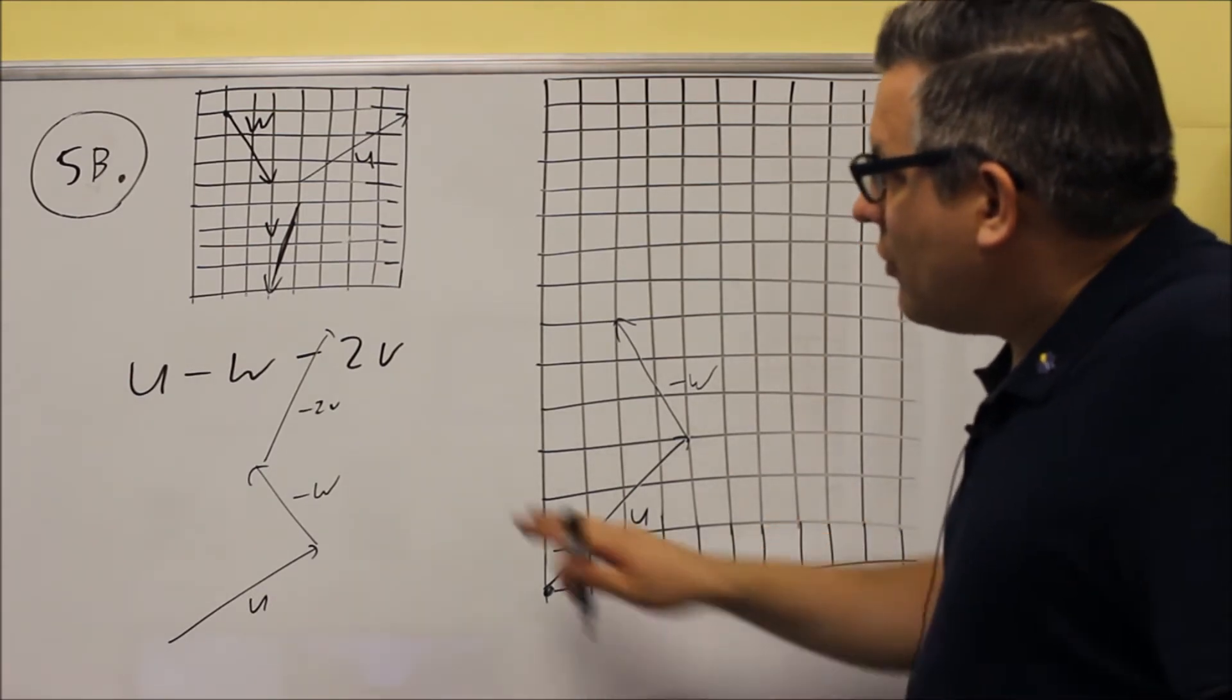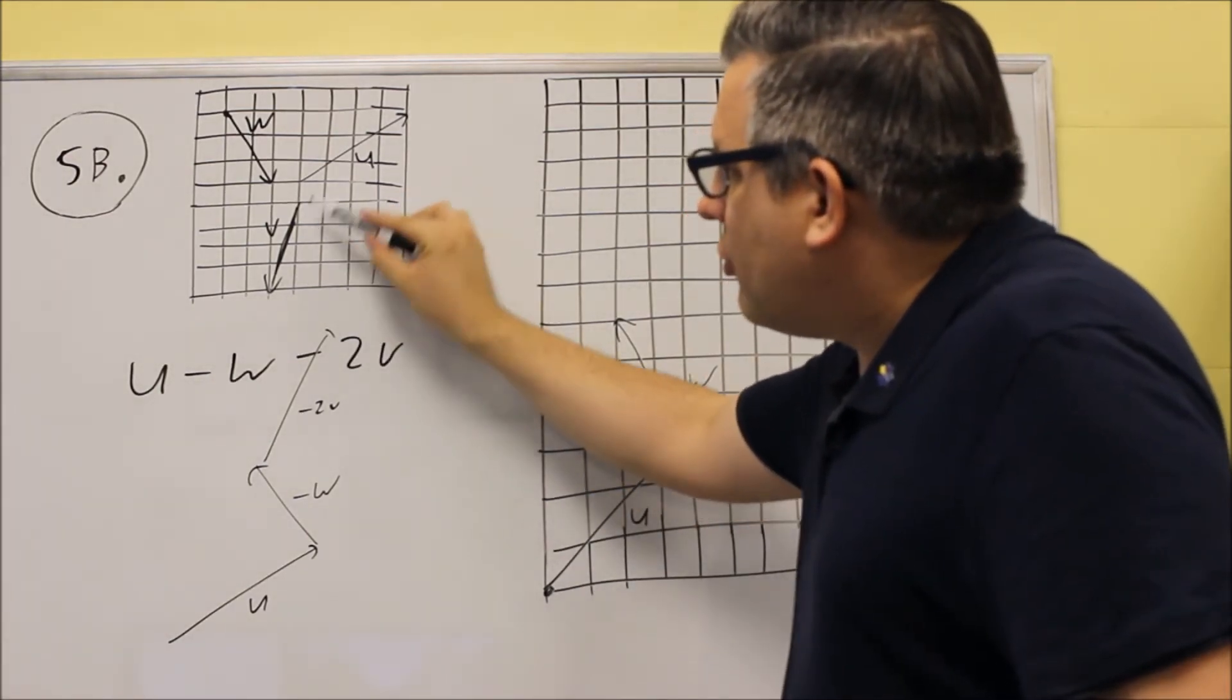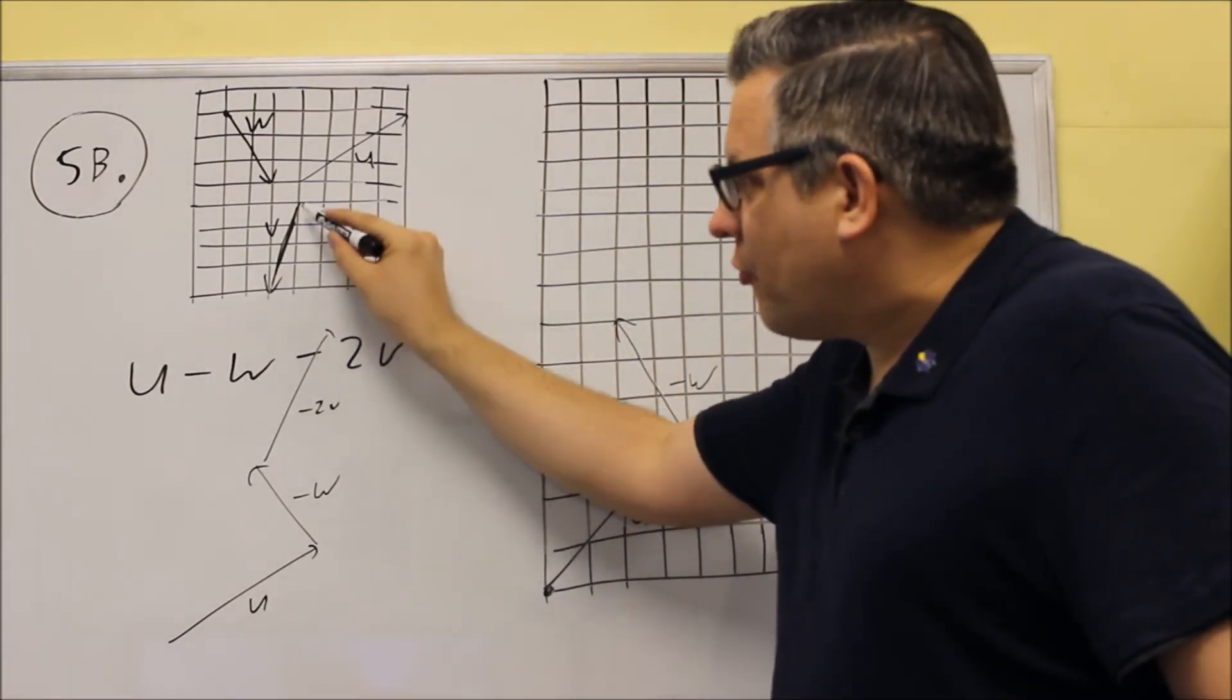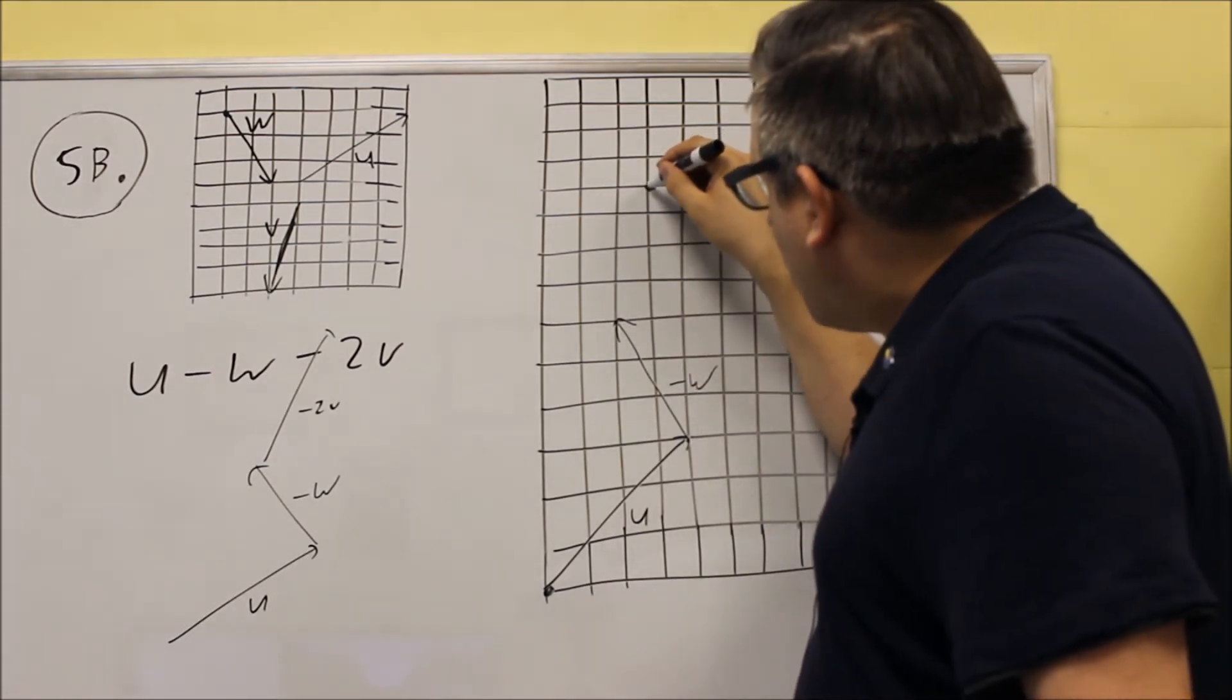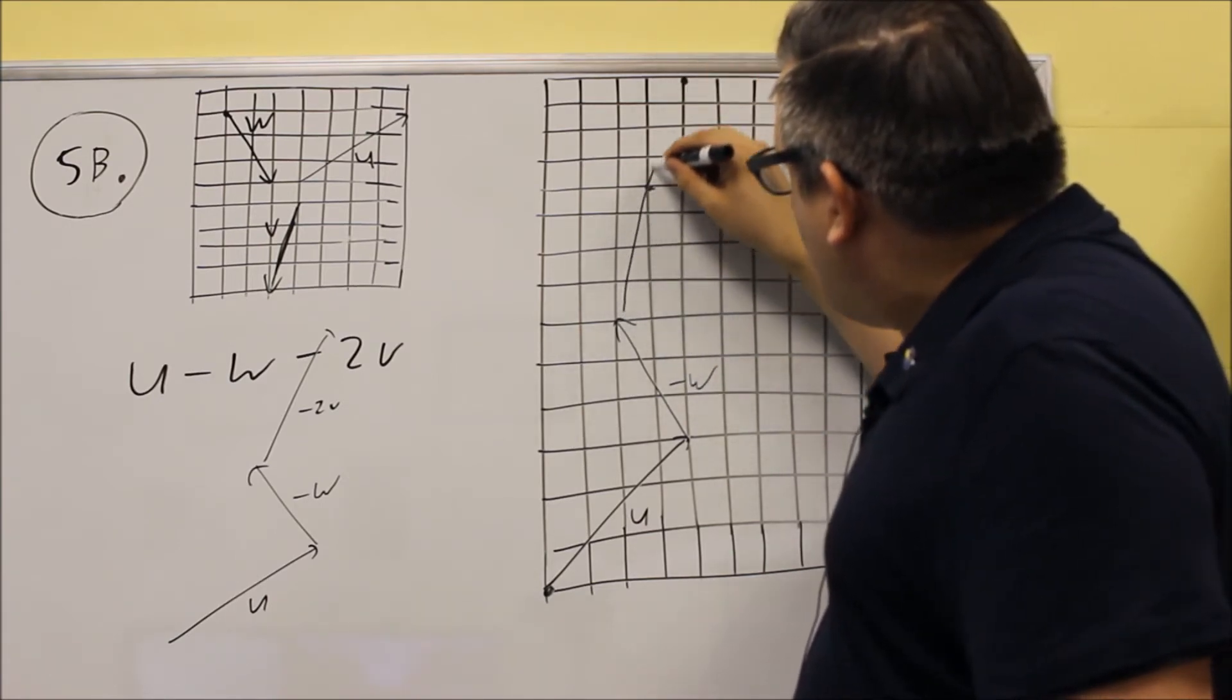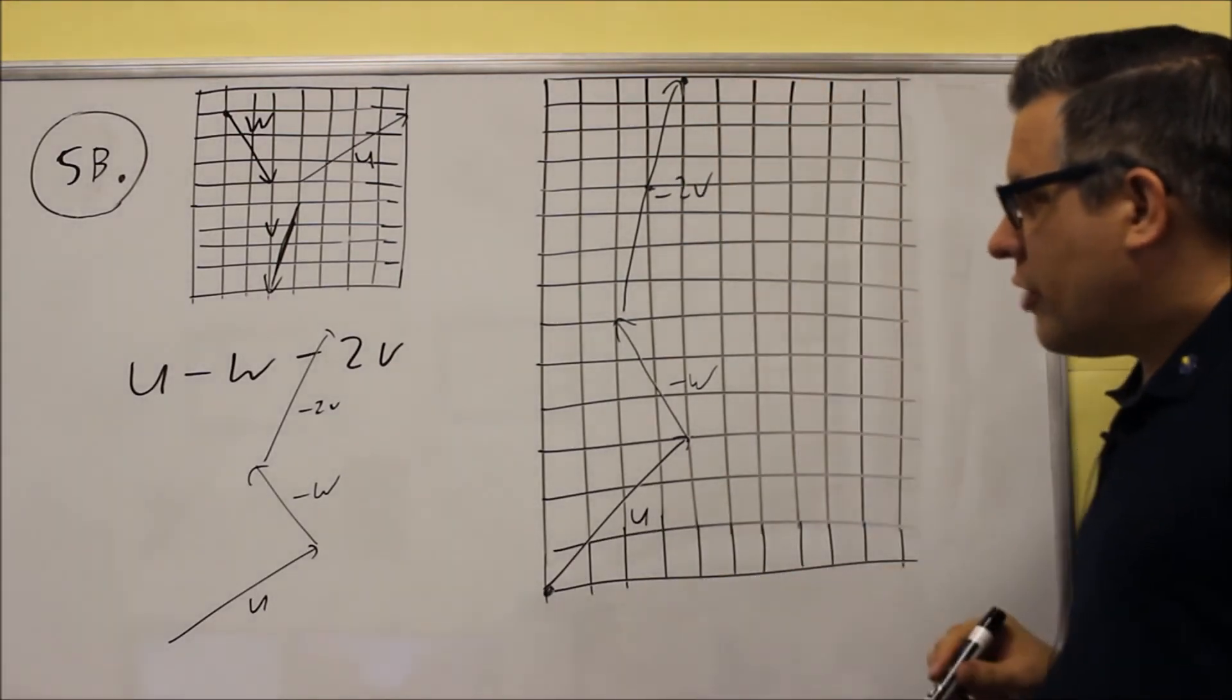Next, we want to have negative 2V. So to do that, we need to switch the arrowhead, and then we have to do two of them. So from here, we're going to go, in this case, one to the right and up four. We do the same thing here, one to the right and up four. We make a dot, one to the right and up four, we're going to do it again. So this whole thing, this is going to be negative 2V.